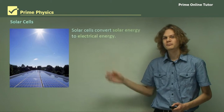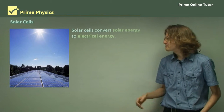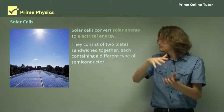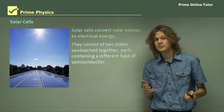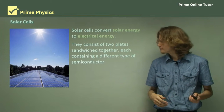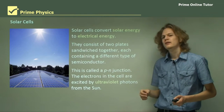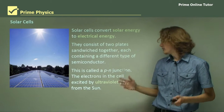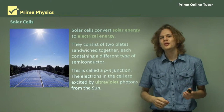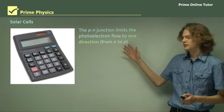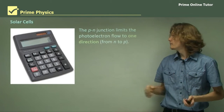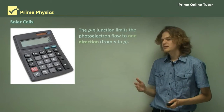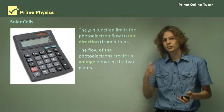A final use is solar cells, which you've probably heard of before. Solar cells convert solar energy — that is, energy from the sun — into electrical energy. They consist of two plates sandwiched together, one on top and one on the bottom, each containing a different type of semiconductor. This is called a p-n junction, where p is for the positive type semiconductor and n is for the negative type semiconductor. The electrons in the cell are excited by ultraviolet photons from the sun, because the sun is a great emitter of ultraviolet light. The p-n junction limits the photoelectron flow to one direction so that the photons can't flow backwards, producing a voltage between the top plate and the bottom plate.